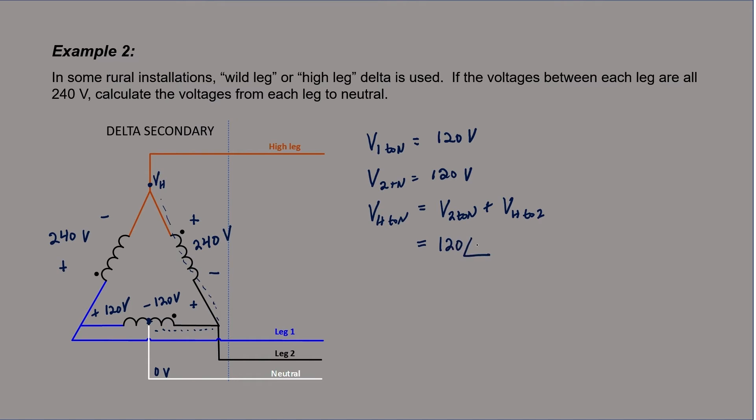Relative to our neutral point, leg two is 120 volts at an angle of zero degrees, and we know that our high leg is 120 degrees out of phase with the voltage at leg two. Remember that in a three-phase system, all of the phases are out of phase with one another by 120 degrees.